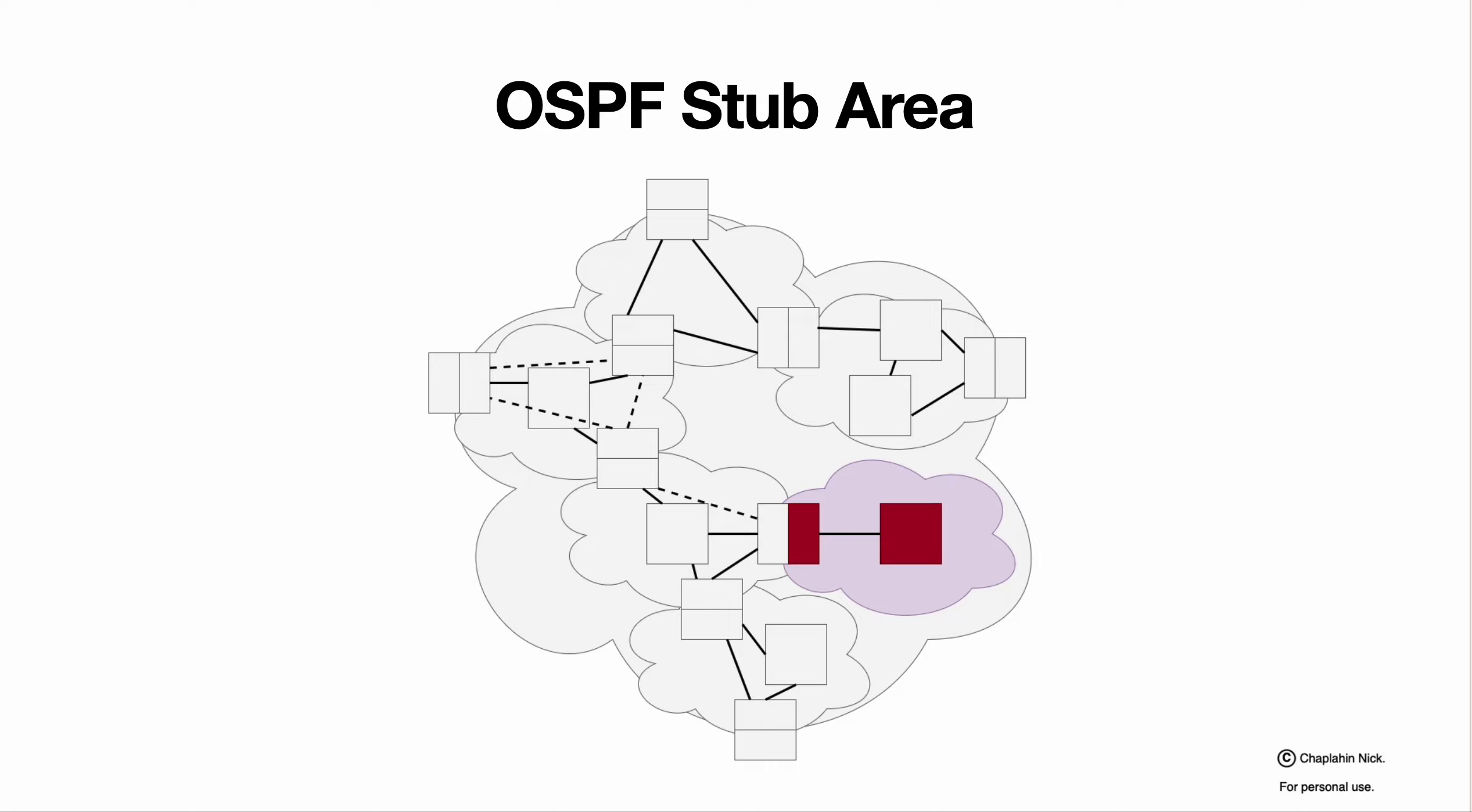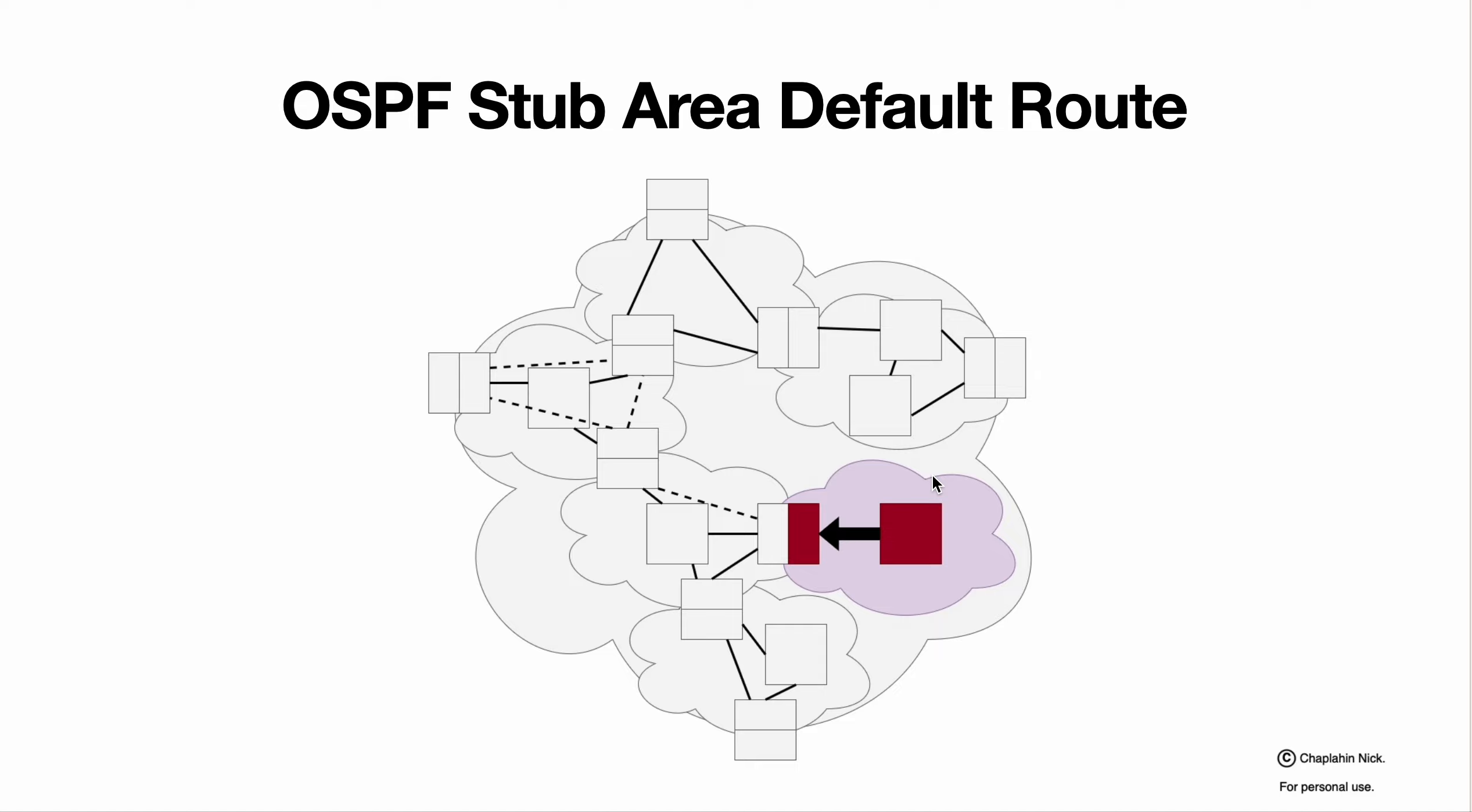Why is it used? Because then devices within stub area should not know nothing about other areas and some conditions of the Autonomous System, because they have a border router that takes care about all the routing of the traffic from this area to the outer wall. And devices within area should not contain all the OSPF tables, especially OSPF tables related to the autonomous system borders, so they don't have to have so much memory, so much calculation power and so on. They could concentrate simply on routing.